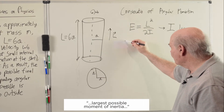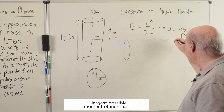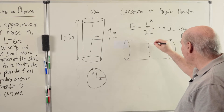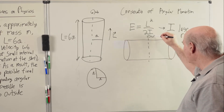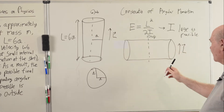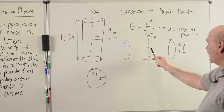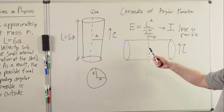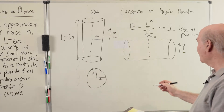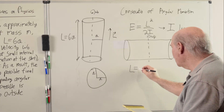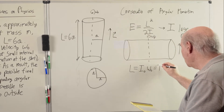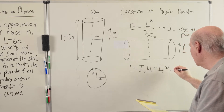So the final position of the satellite is like this — it's still going to be spinning, this is omega F. Its L will still be in the upward direction, so now it's going to be spinning round and round this way. We just have to equate the initial angular momentum to the final angular momentum.